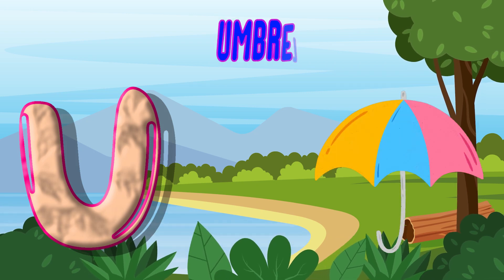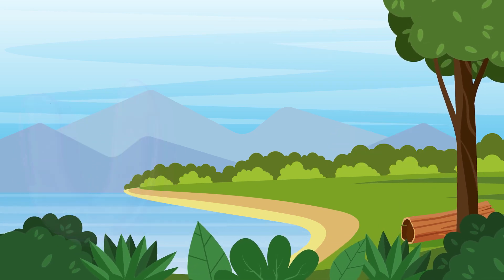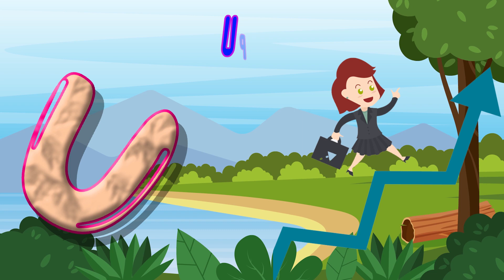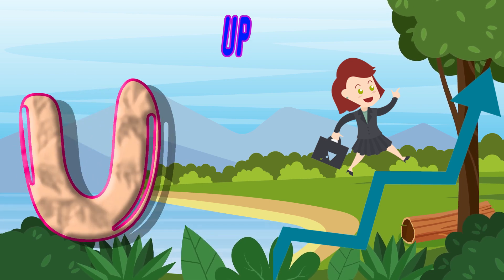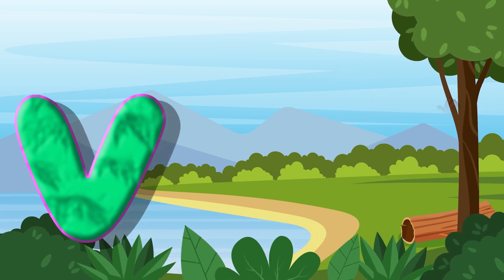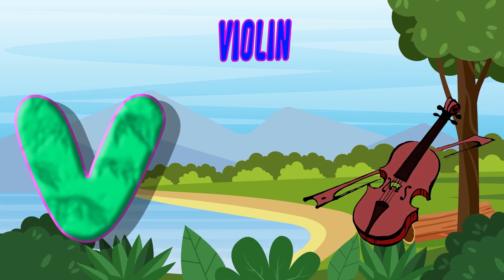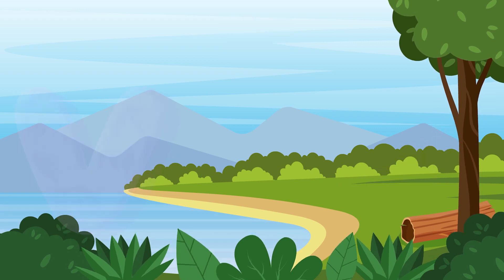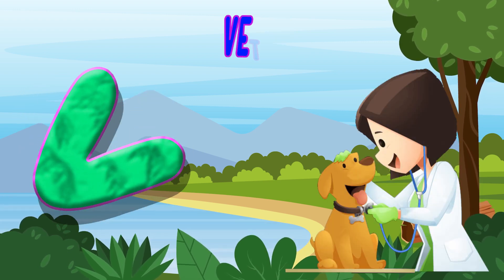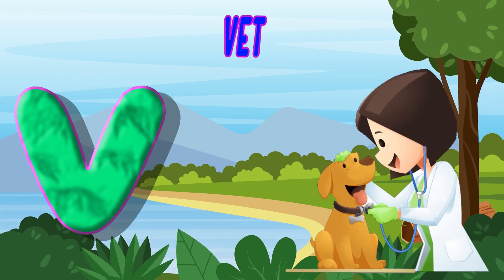U is for Umbrella. U, U, Umbrella. U is for Up. U, U, Up. V is for Violin. V, V, Violin. V is for Vet. V, V, Vet.